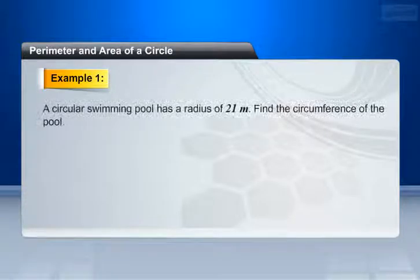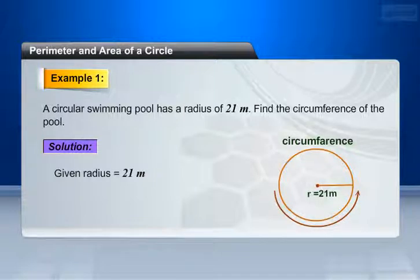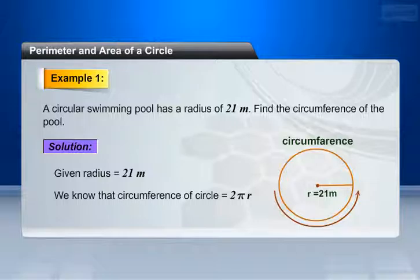Example 1: A circular swimming pool has a radius of 21 meters. Find the circumference of the pool. Solution: Given radius equals 21 meters. We have to find circumference of pool, which is circular in shape.